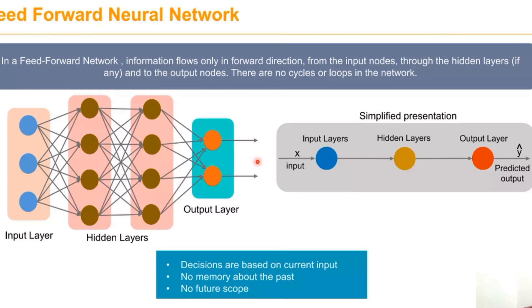In feed-forward networks, there are main drawbacks. The decisions are made only based on the current input you're providing, and there is no memory about the past. So there will be no future scope about using this feed-forward network.